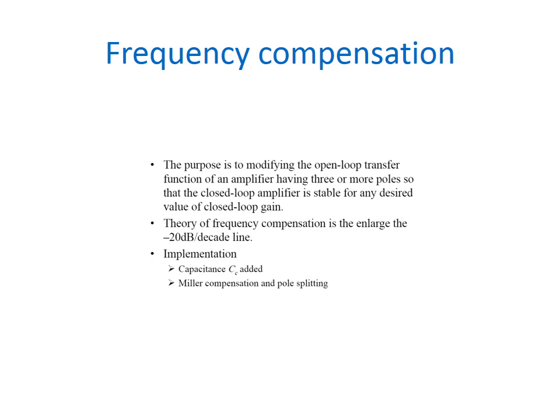Frequency compensation, the purpose of frequency compensation is to modify the open loop transfer function of the amplifier having 3 or more poles so that the closed loop amplifier is stable for any desired value of closed loop gain. The theory of frequency compensation is the enlarging of minus 20 decibel per decade length. Thus, here the implementation is using CC capacitance and Miller compensation and closed.